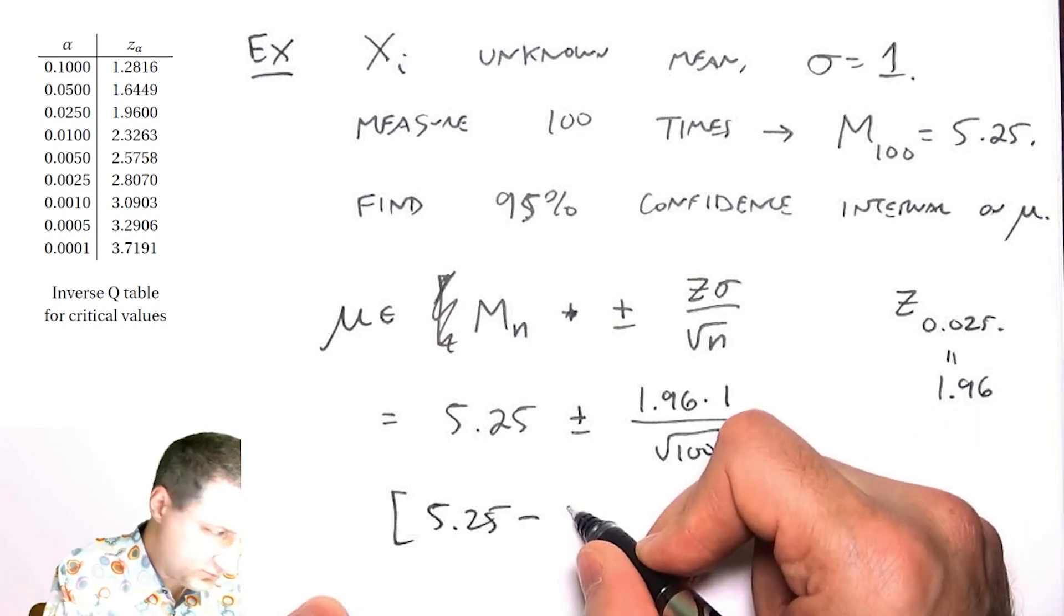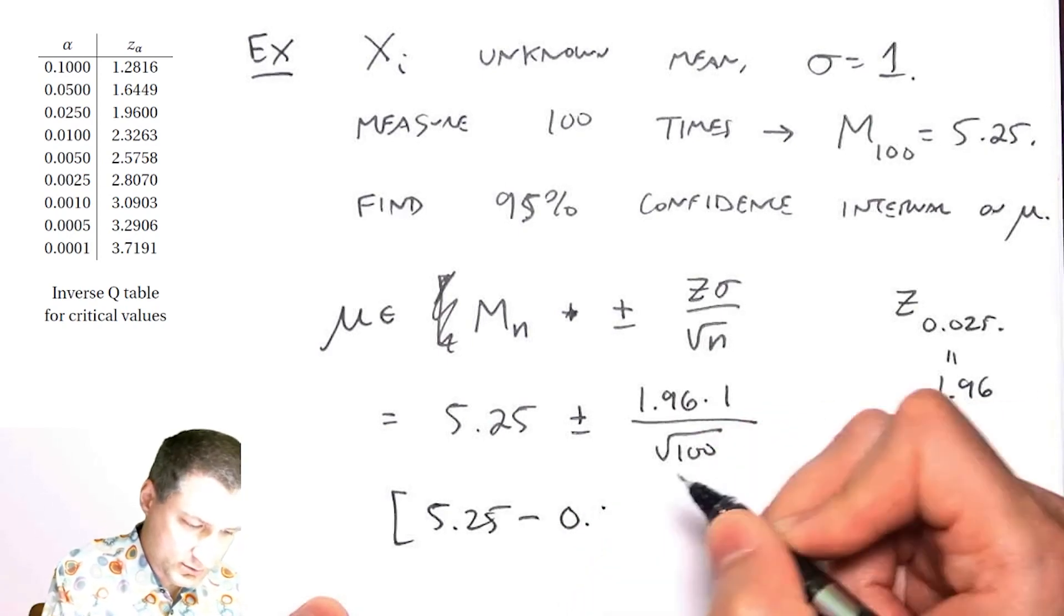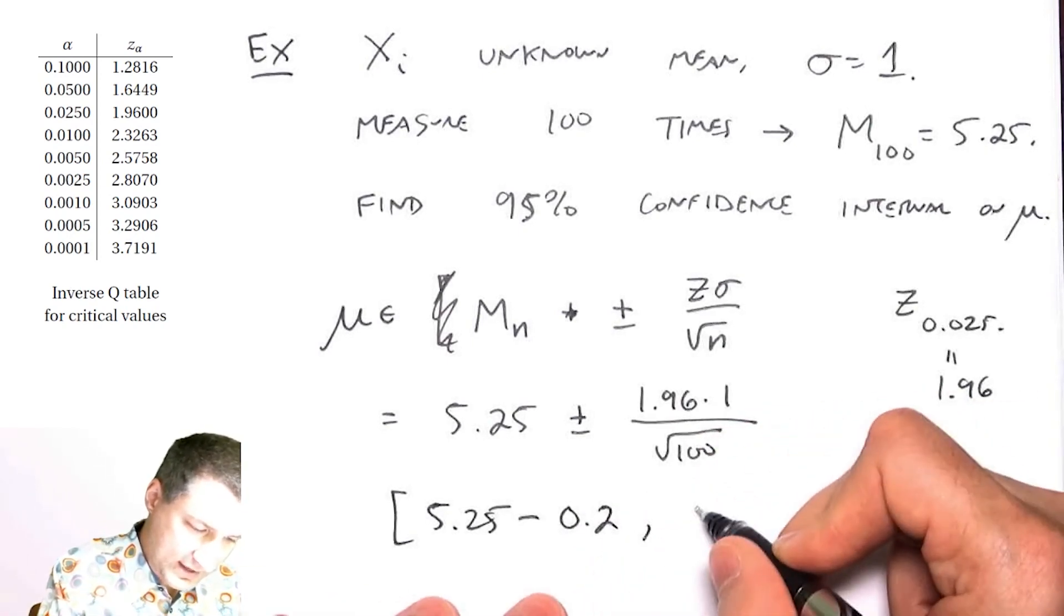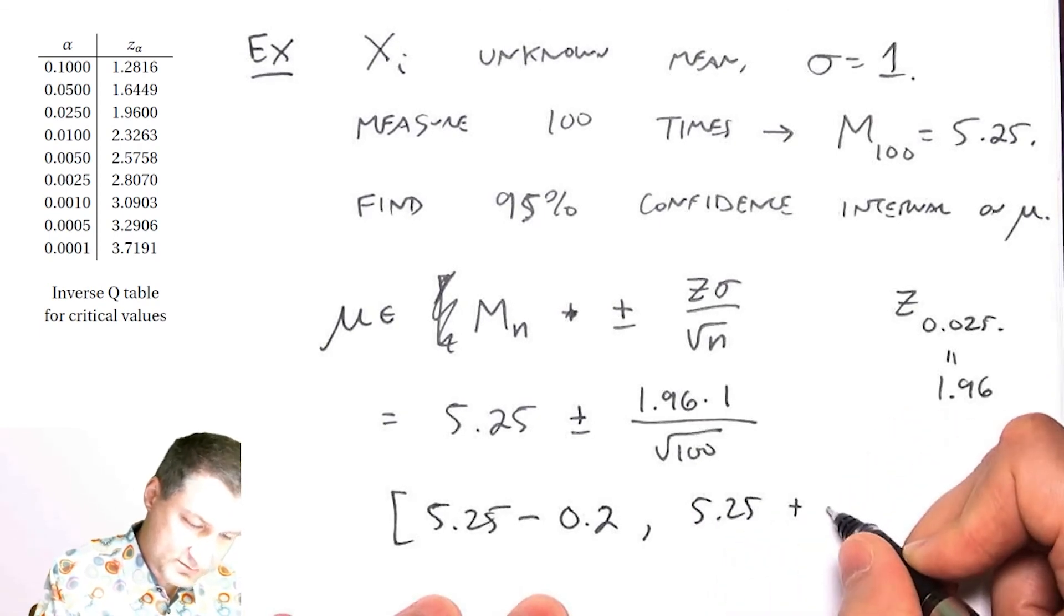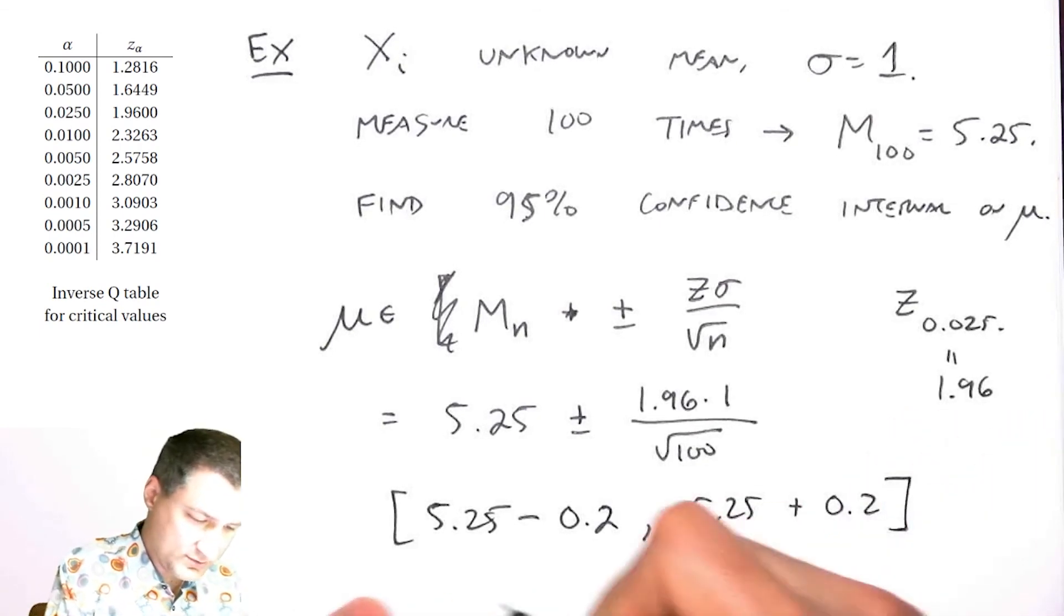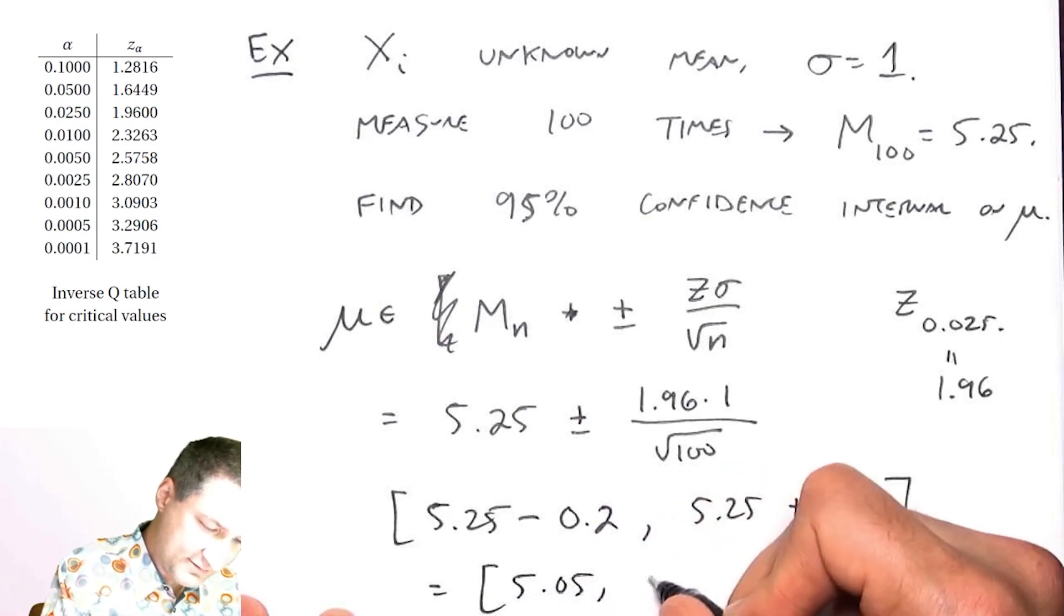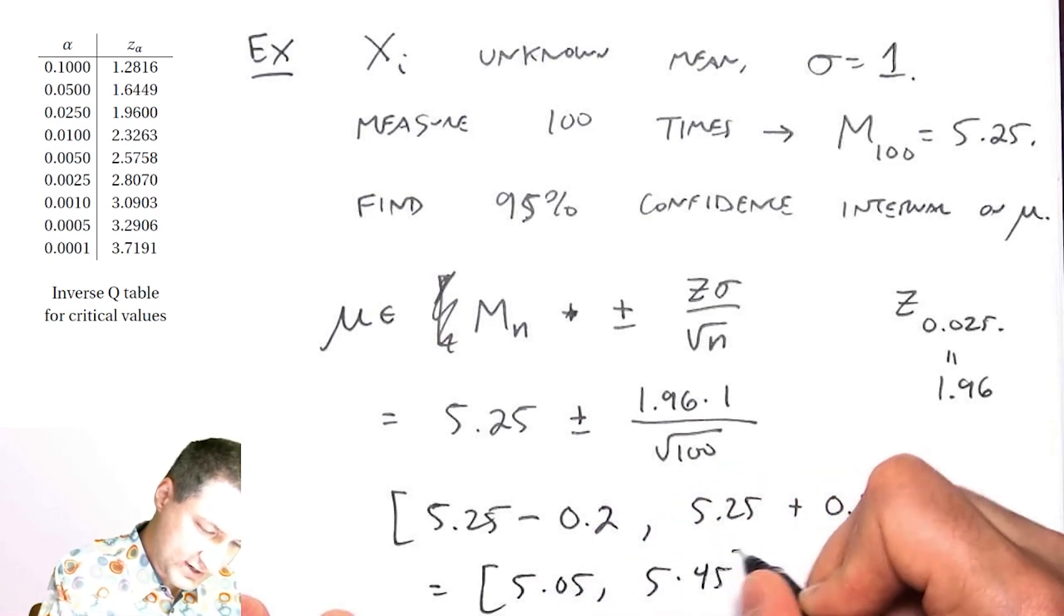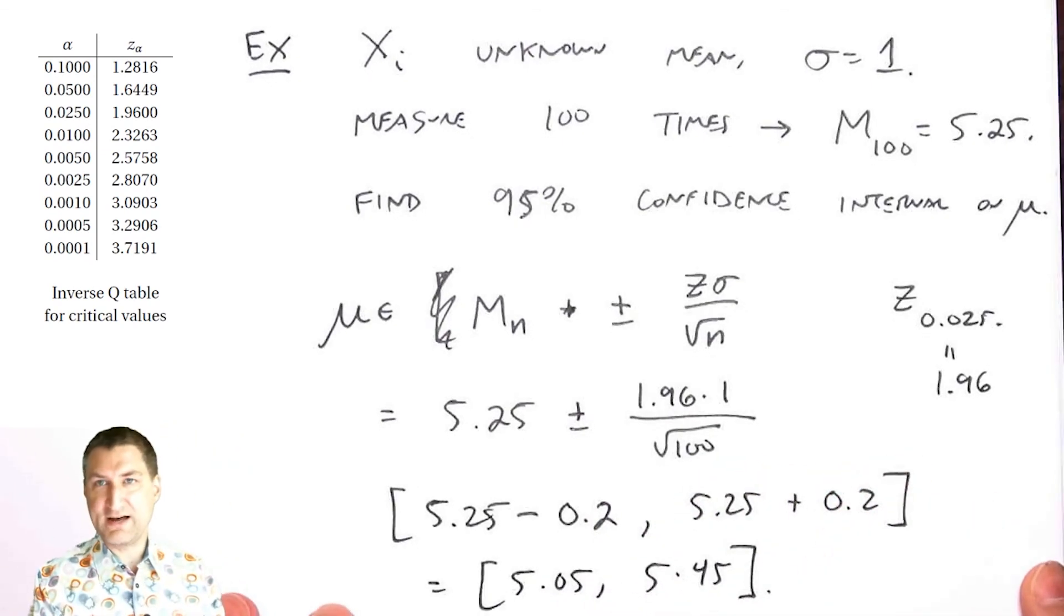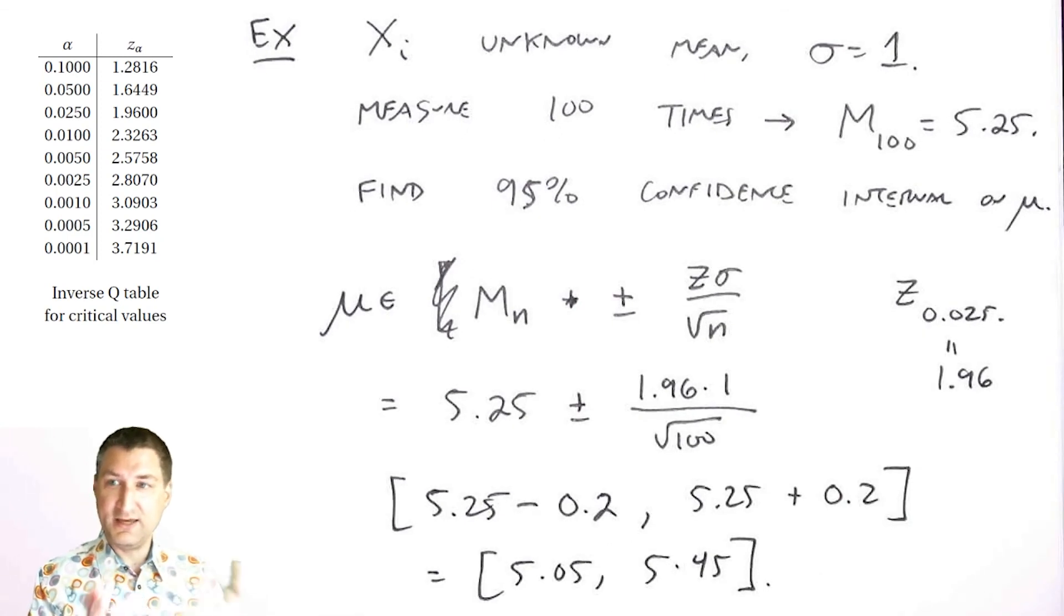So it's [5.25 - 0.2, 5.25 + 0.2], which equals [5.05, 5.45]. This would be my 95% confidence interval on the mean given the values that I saw.